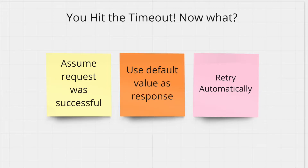The other thing you can do is use a default response in case service B does not get back to you. This is a pretty safe choice. It depends on your use case, but if having a default value makes sense, you can just use a default value and not try to call service B again.